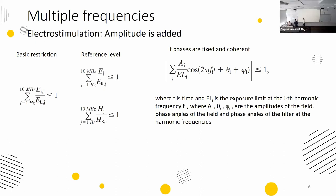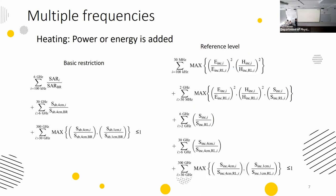This approach of adding spectral components is quite conservative because it assumes all spectral components are in phase. When you know the exact phases and the phase shift between components is constant and confirmed, you could apply a different formula and get lower combined results, making it easier to comply with the standard. For heating, since heating is proportional to power or energy, you need to add the square values of amplitude, or SAR itself, so you add powers.